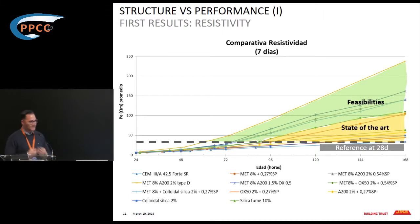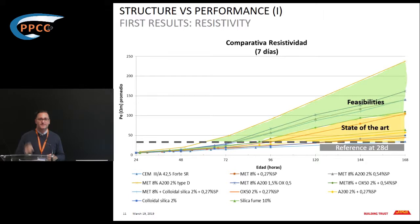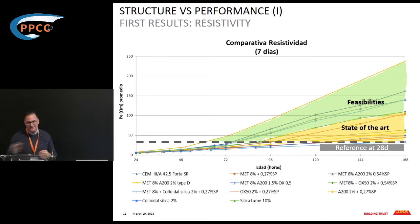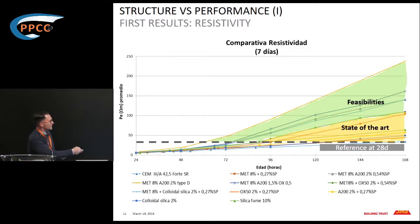Just to give a hint: by combining metakaolin — with many kinds available, but few extremely good for pore structure refinement and early mechanical and physical contributions — with nanosilica on the other side, available as waterborne solutions, suspensions, or dry powders with varying reactivity and particle size distribution, we made a significant screening and noticed we can move forward from the standard 28-day figures to something really interesting.